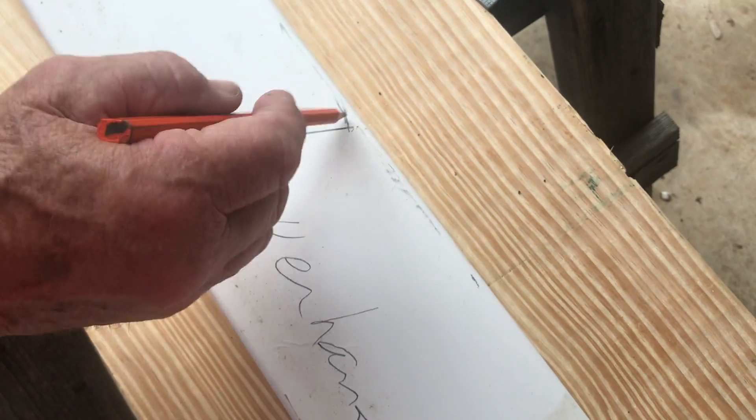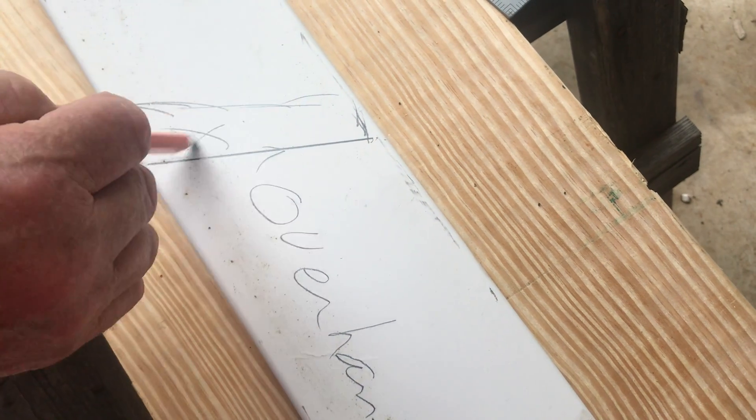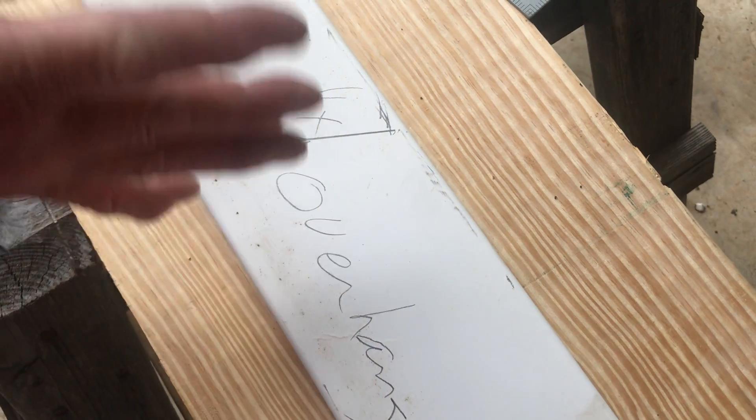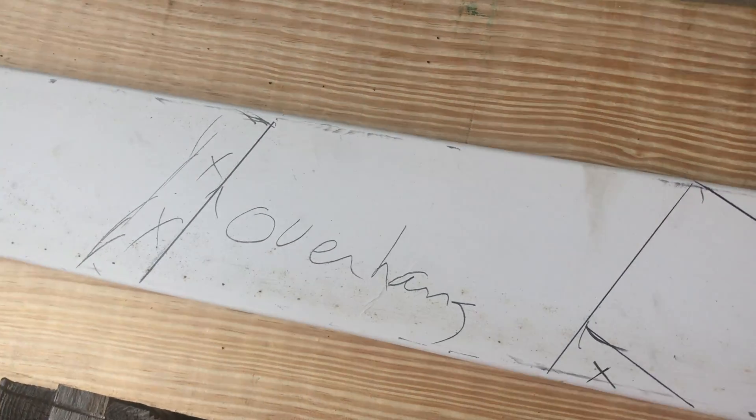And this is where my sub-fascia board would be. Right there at the end of that overhang, end of that rafter. Now, let's go back up to the top.